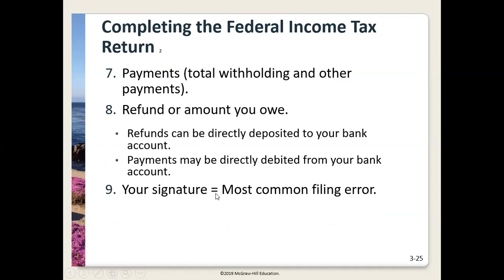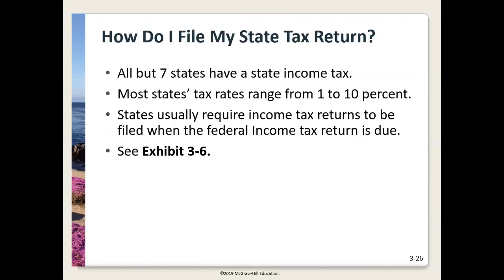The most common filing error when filing paper returns is forgetting a signature. You may also have to pay additional taxes — for example, if you own your own business as a sole proprietor, you don't pay yourself a paycheck with withholding, so you should be making federal income tax and social security payments as quarterly estimated payments. A self-employed individual doesn't avoid social security tax; they just pay it differently by including it on their federal income tax return.